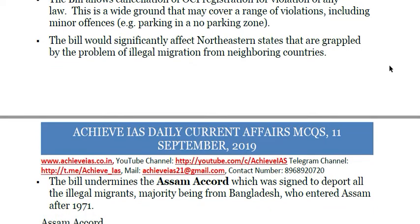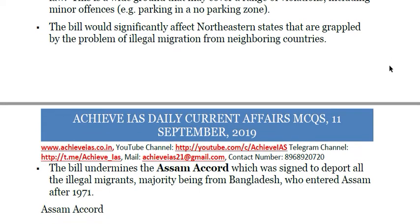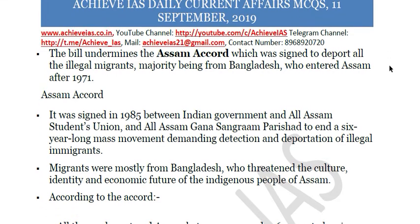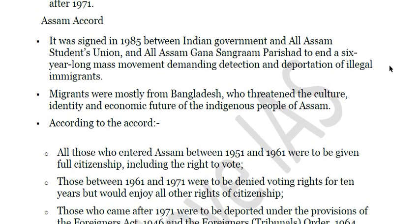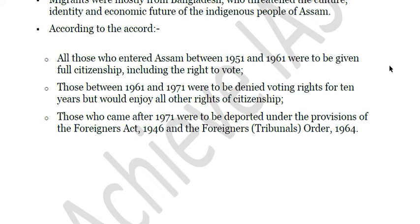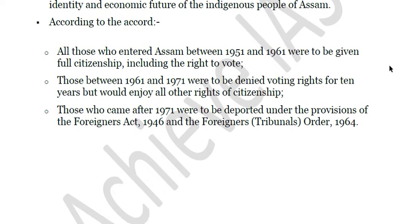The bill also undermines the Assam Accord, which was signed to deport all illegal migrants regardless of religion who entered Assam after 1971. The Assam Accord was signed between the Indian government and the All Assam Students Union and the All Assam Gana Sangram Parishad after a six-year-long mass movement demanding detection and deportation of illegal immigrants, who were mostly from Bangladesh. According to the accord, those who entered Assam between 1951 and 1961 were to be given full citizenship including the right to vote; those between 1961 and 1971 were denied the right to vote for 10 years but enjoyed all other rights; and those who came after 1971 were to be deported under the Foreigners Act 1946 and the Foreigners Tribunal Order 1964.